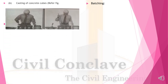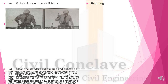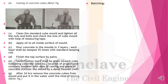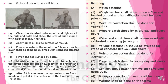Casting of concrete cubes: Clean the cube mold and tighten all nuts. Check the size with a measuring tape. Apply oil to the inside surface. Pour concrete in three layers and tamp with minimum 35 strokes using a 16mm rod. Finish the top surface. Mark identification on the cube. Cover with damp hessian cloth. After 24 hours, remove molds and immerse cubes in a water tank.